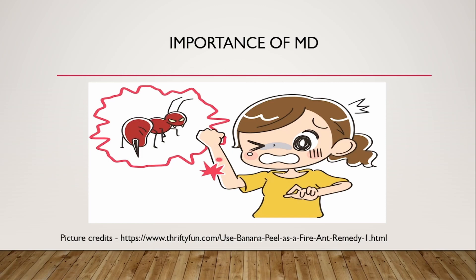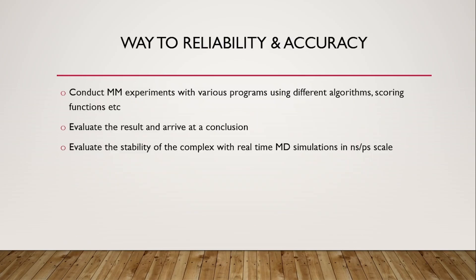Molecular mechanics can be used to study the docking efficiency, feasibility, and docking site of a protein-ligand complex, but the real-time behavior — whether the complex is stable, whether it has conformational changes after binding — requires molecular dynamics. Docking studies identify the site of binding, binding strength, and feasibility, while molecular dynamics studies the real-time behavior of the system.